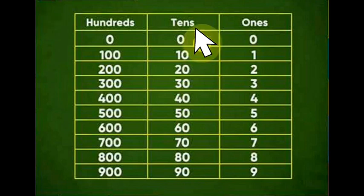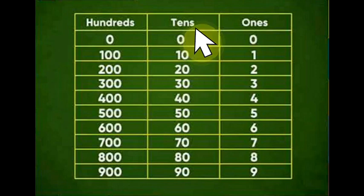In the 10's column: 0, 10, 20, 30, 40, 50, 60, 70, 80, 90. A 2-digit number is known as 10's.